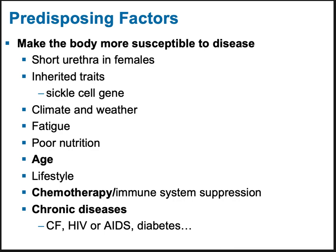Age is something you obviously cannot control, but the older you are, the more susceptible you are to disease. Other lifestyle choices include risky behaviors. Things like chemotherapy greatly suppress your immune system. Other immune system suppression could occur when donating or receiving an organ, or if you have an autoimmune disease requiring immune suppression to decrease symptoms.